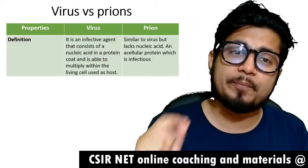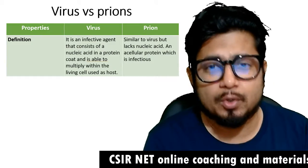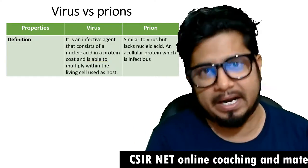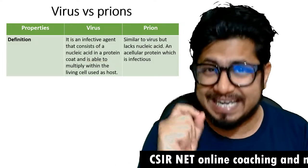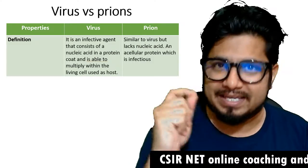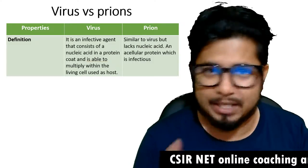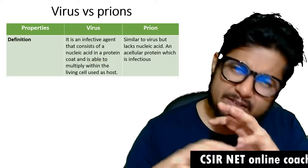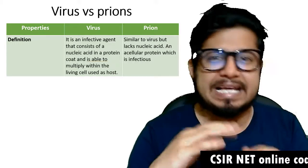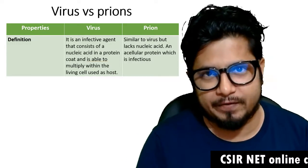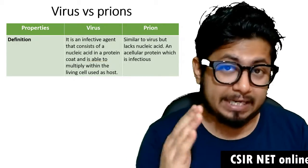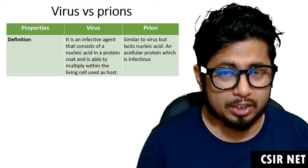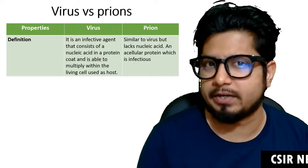Prions are simply known as infectious protein particles. Similar to viruses, but they lack nucleic acid — they only have proteins, specifically misfolded proteins, that can infect individuals and cause neurological or neurodegenerative disorders.